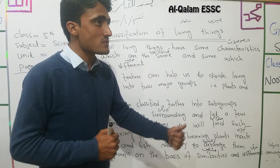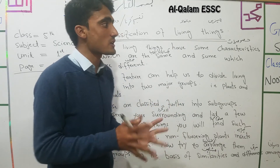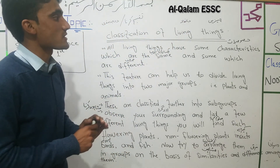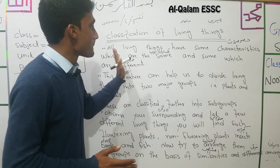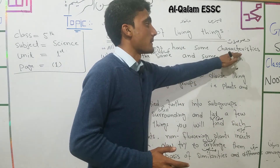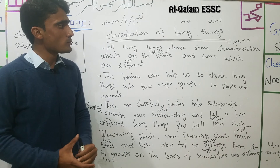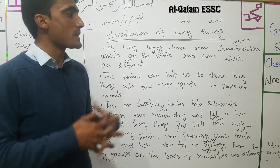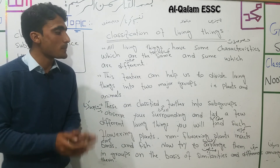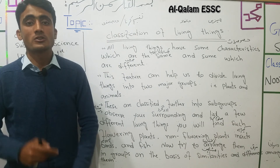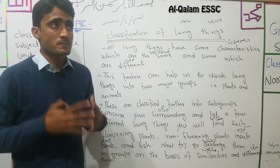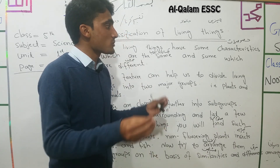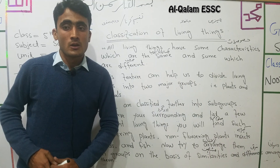Classification of living things means we arrange living things into groups that have the same characters — on the basis of similarities and differences. All living things are divided into groups and subgroups. Inshallah, the next topic is to discuss kingdoms and organisms. We will discuss all the subgroups in the next class. That is enough.